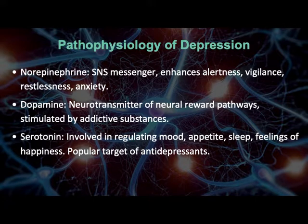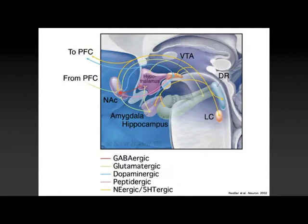Why these are imbalanced is a more difficult question. To understand their release, storage, and how their release might be affected abnormally, we have to try to understand the wiring of the brain. What you're looking at here is a simplified schematic — as complicated as it looks — just showing the interconnections between different areas of the brain.